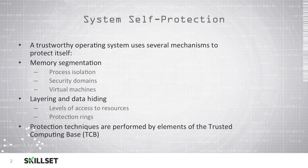Operating systems can also use layering and data hiding to provide different levels of access to resources depending on how trustworthy the application is, and protection rings which allow different applications to operate in different rings where they have different levels of protection. Protection techniques are performed by elements of a trusted computing base, or TCB.